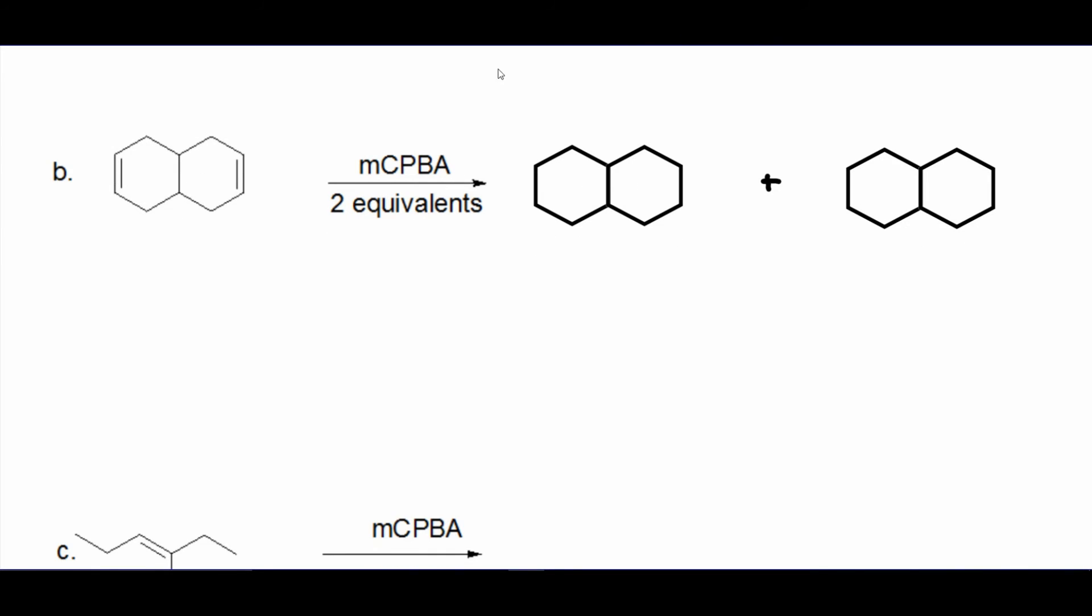Next question: We're going to do the same here with epoxidation. It says two equivalents, so I'm going to assume we added on both sides. It's syn addition, and because the molecule is completely symmetrical there's no need of doing the enantiomer of this. Instead I'm just going to do bottom face addition to your left and top face addition to your right to avoid repetitions.